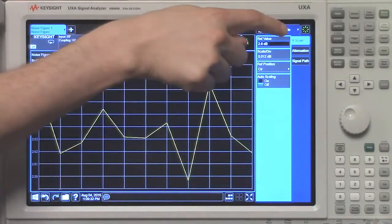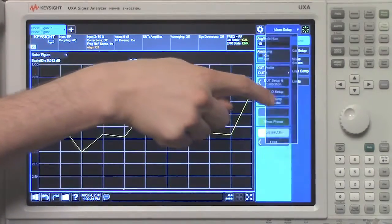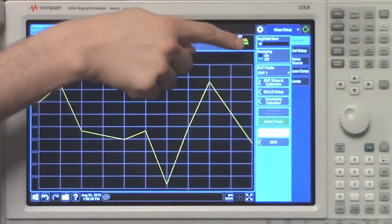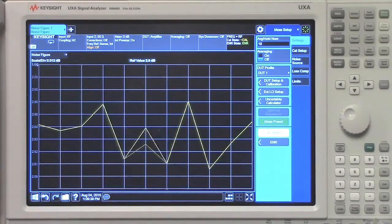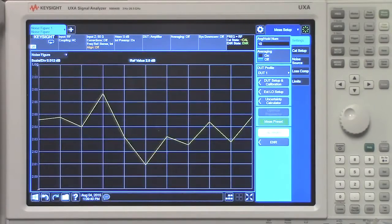Let's navigate to the measurement setup menu panel. On the top you'll see the average hold number is set to 10 and averaging is toggled to off by default.